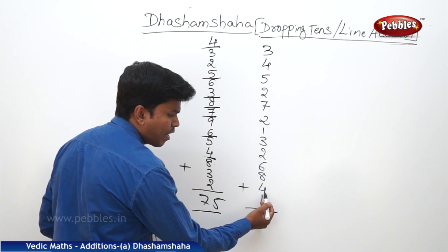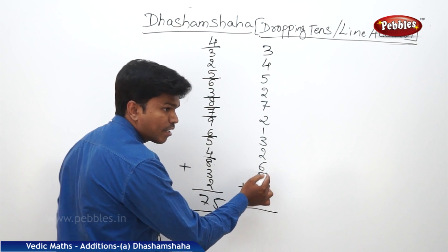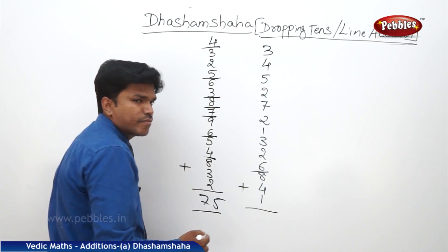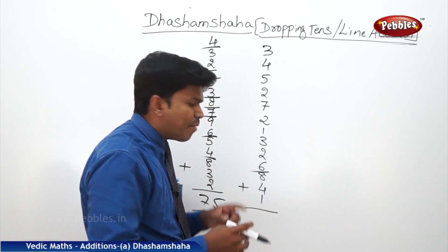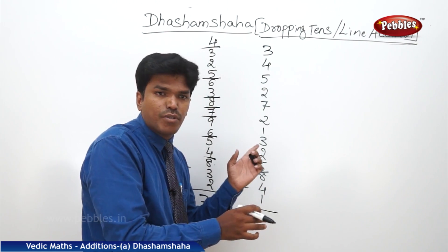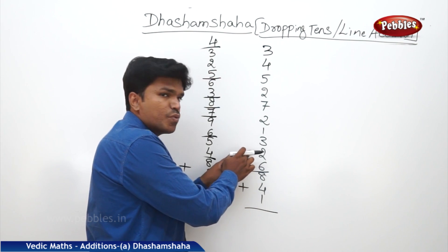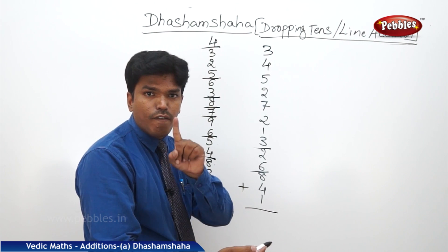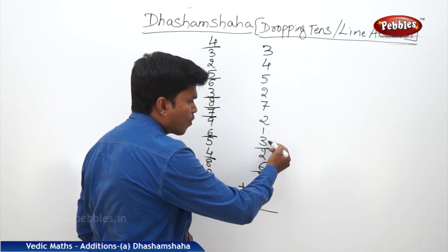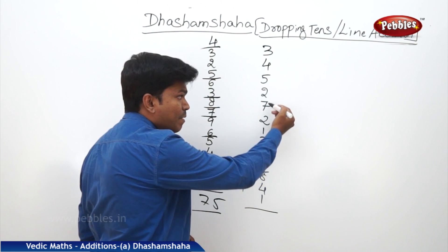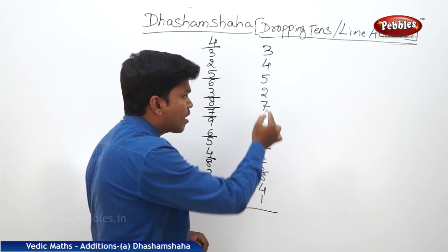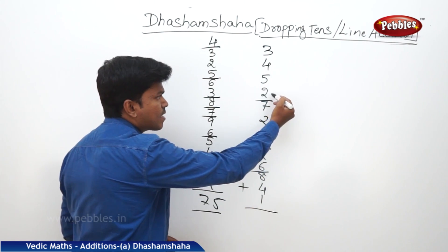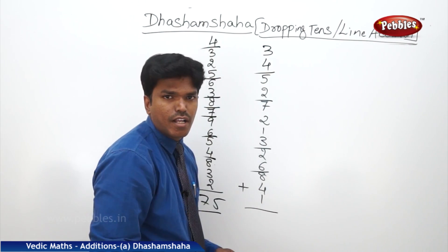1 plus 4? 5. 5 plus 8? 13. Is it more than 10? Yes. Drop it. Remaining is 3. Immediately carry the 3 to the next number. 3 plus 6? 9. 9 plus 2? 11. Again more than 10, so drop it. Remaining is 1. 1 plus 3? 4. 4 plus 1? 5. 5 plus 2? 7. 7 plus 7? 14. So drop it. Remaining is 4. 4 plus 2? 6. 6 plus 5? 11.